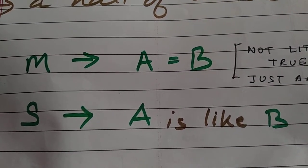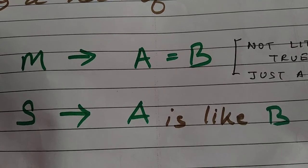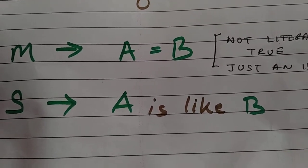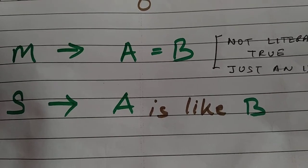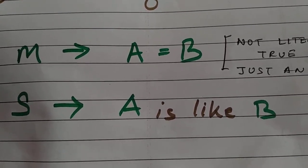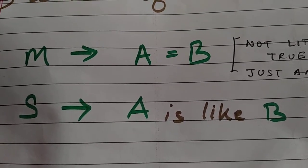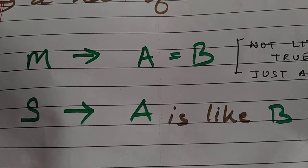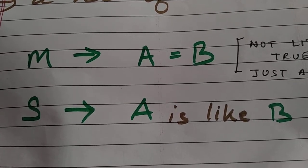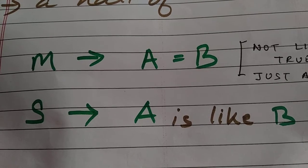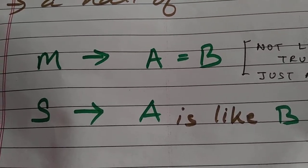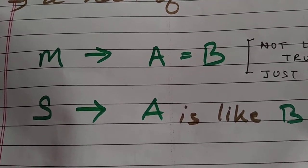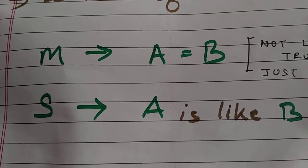Look at what I have drawn here — M and S. M is for metaphor and S is for simile. The metaphors say that A is equal to B, and the similes say A is like B. Metaphors will forcefully bring the similarity between the two. Do you find any similarity between A and B? Not in the strokes, not in the curves — there is no similarity when you see them. But the writer will find some hidden similarity and say A is equal to B, while simile will say A is just like B.